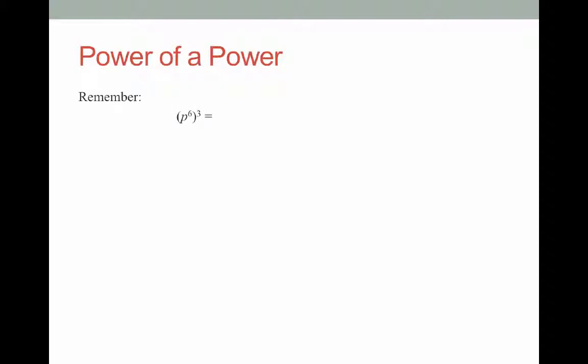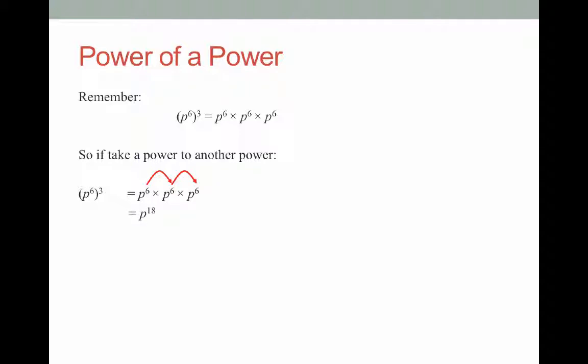Let's take a look at the power of a power rule. Remember that p to the power of 6, to the power of 3, means you're going to take everything inside that bracket — which is p to the power of 6 — and times it by itself three times. So p to the power of 6, to the power of 3, means p to the power of 6 times p to the power of 6 times p to the power of 6. The multiplying law says that when I multiply indices with the same base I add the powers, so I add 6 plus 6 plus 6, giving me p to the power of 18.